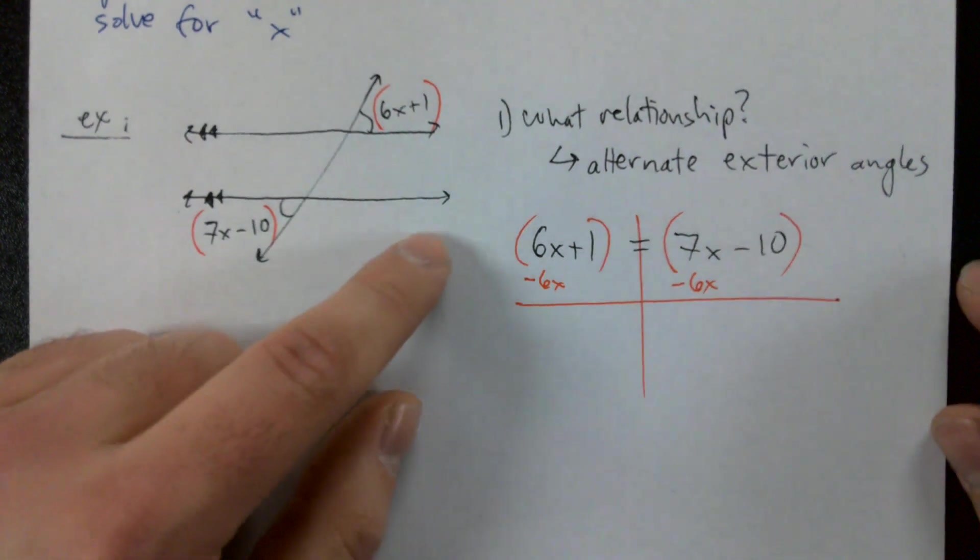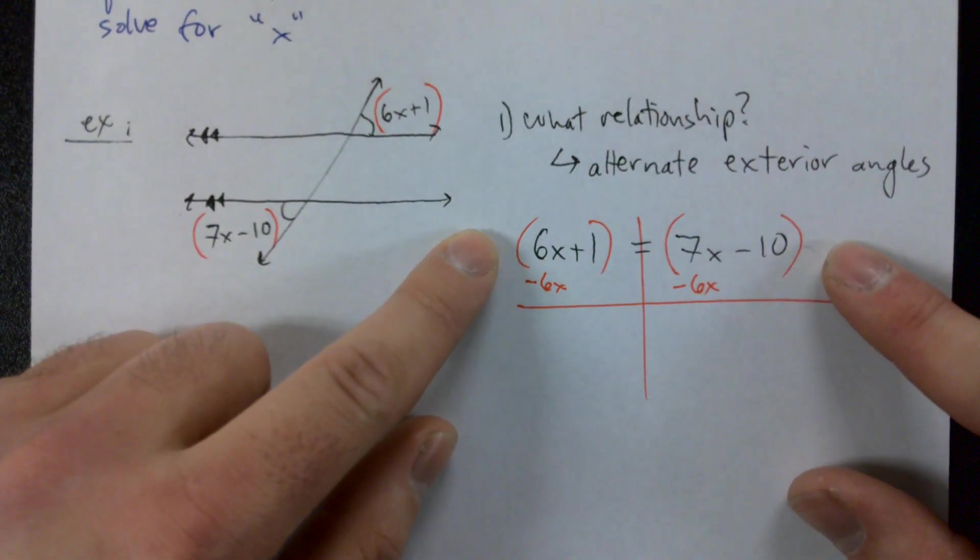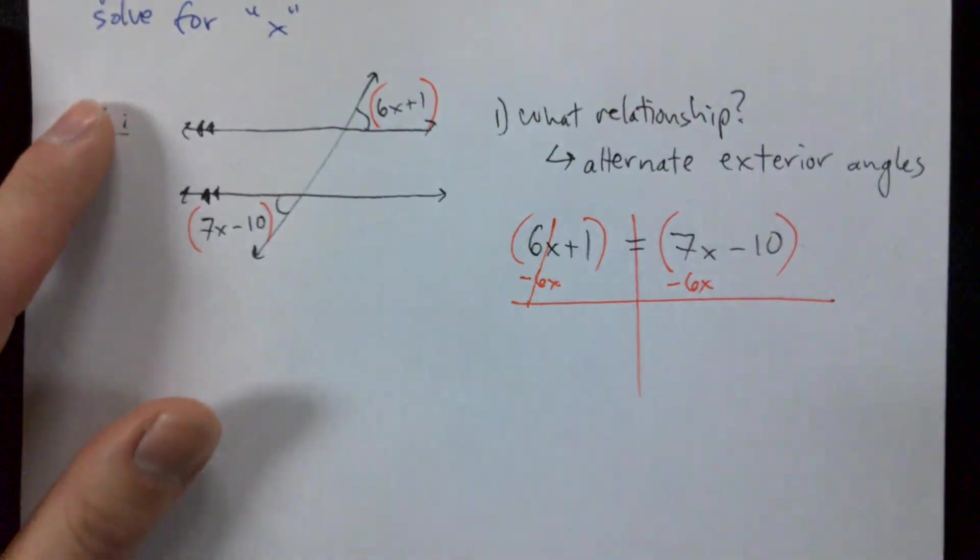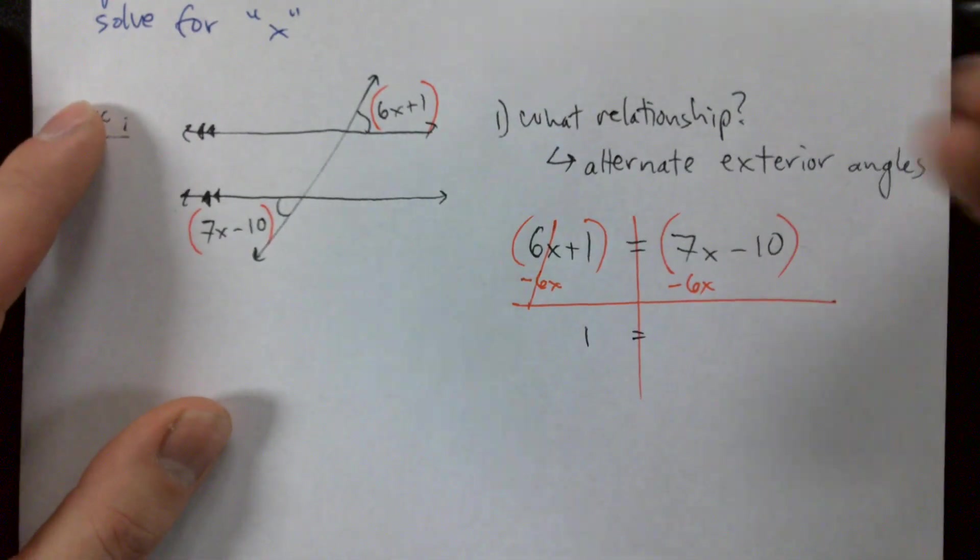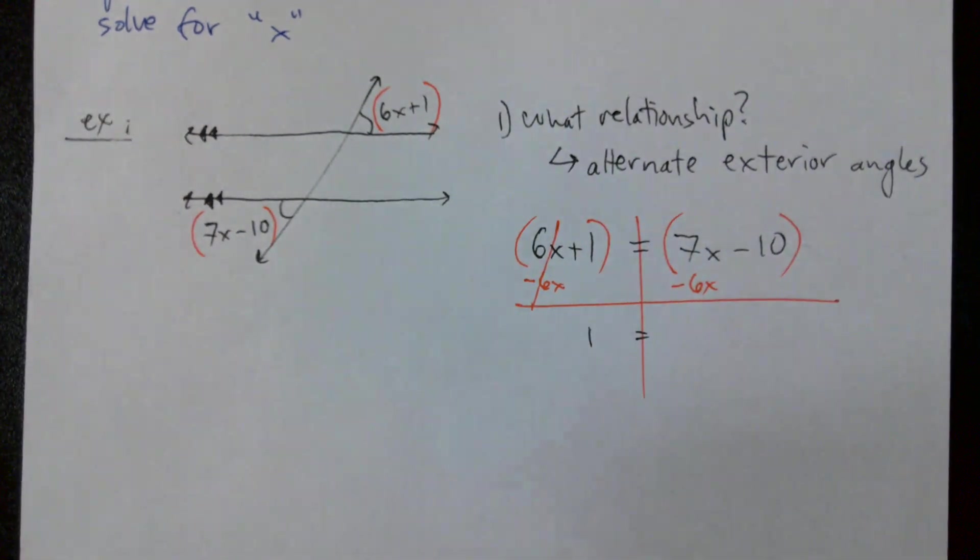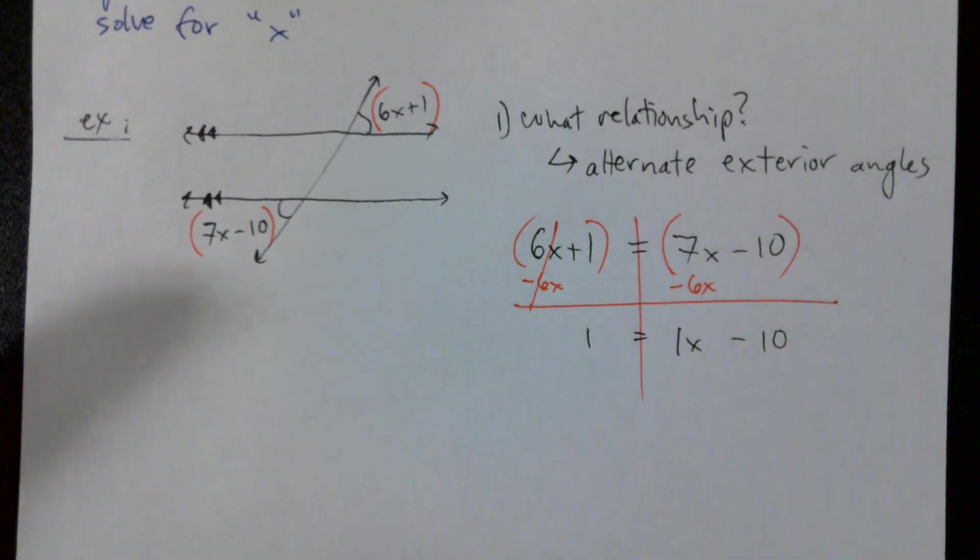Is it these red parentheses that are confusing? Maybe? No? Okay. Those go away. We're left with 1 equals, what's 7x minus 6x? 1x minus 10.